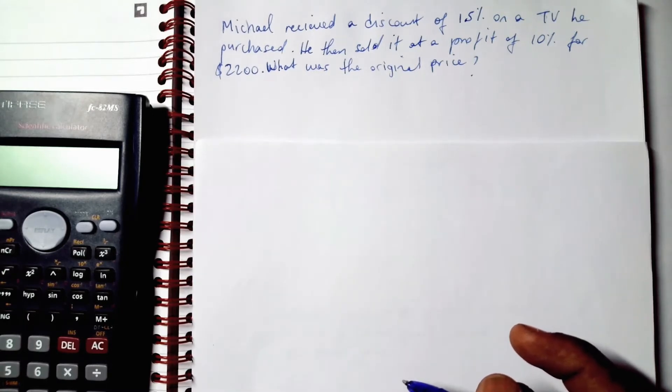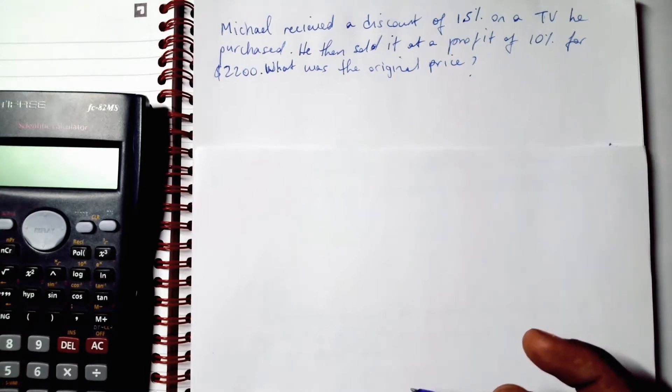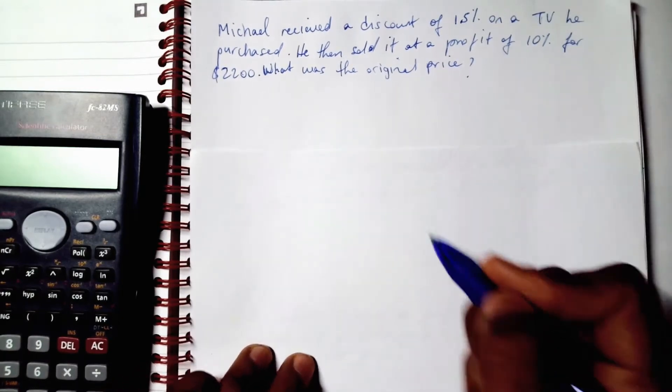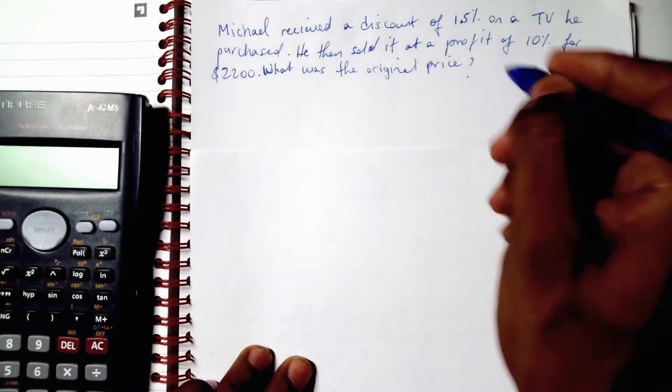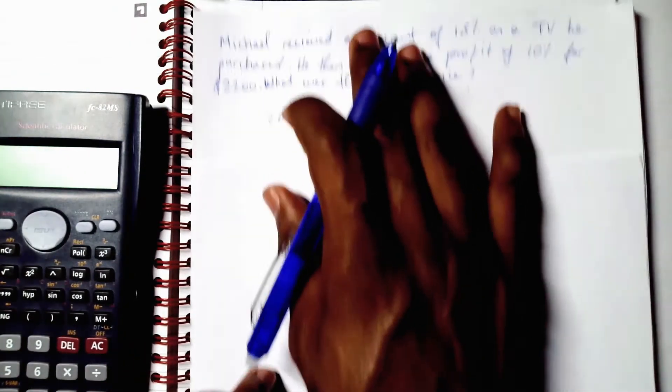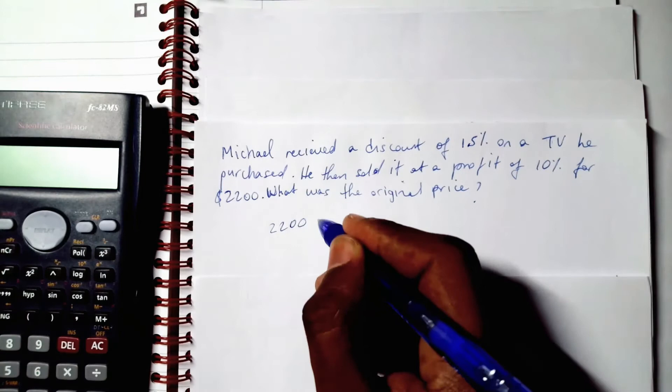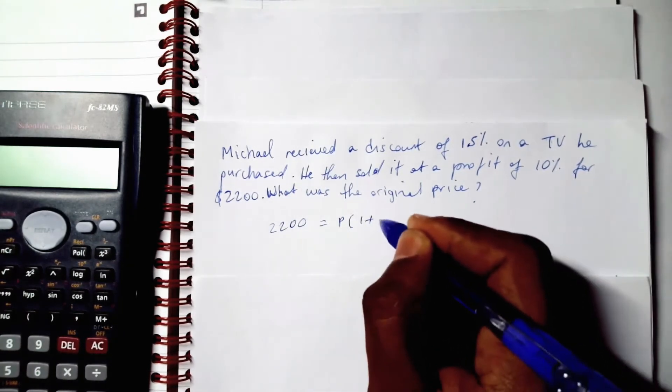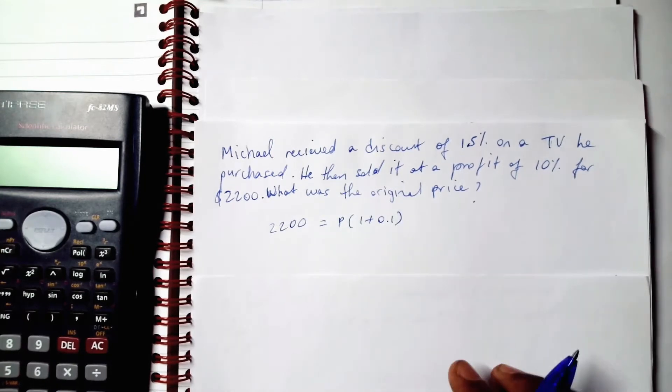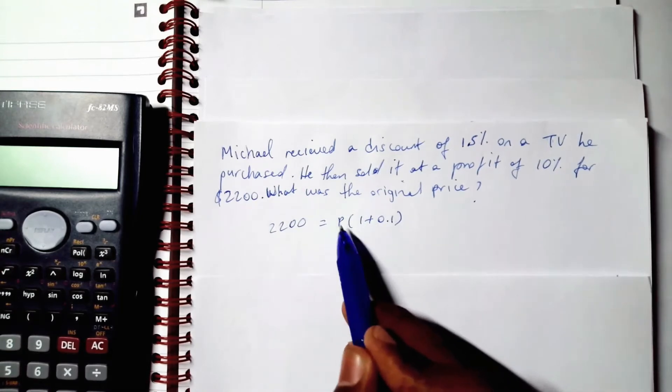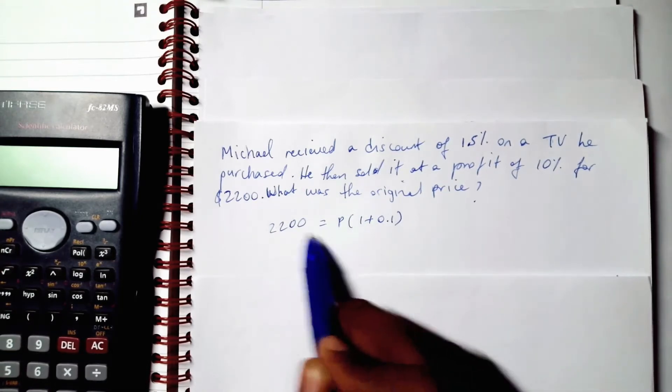We're going to have to work backwards by finding the price after the 10% profit was applied. We know that the final result was $2200 and this was because a 10% profit was applied to some number we don't know.